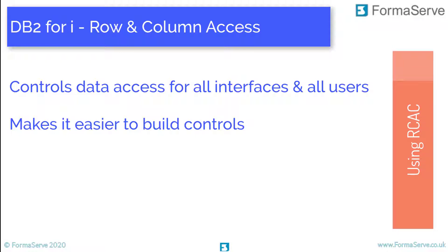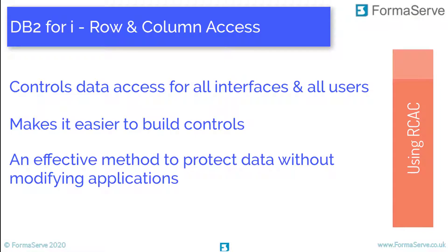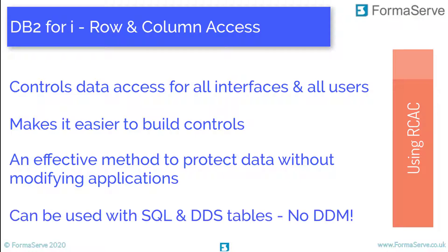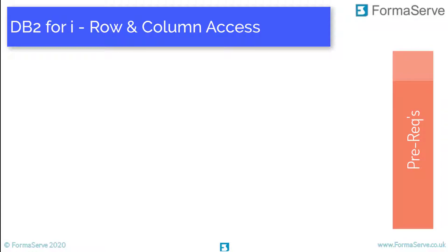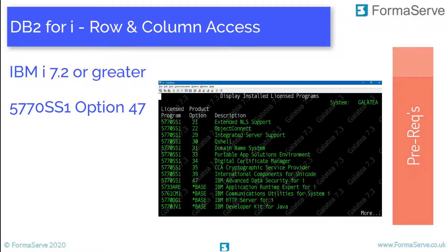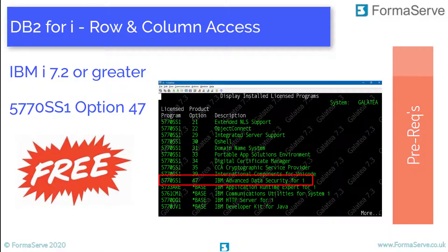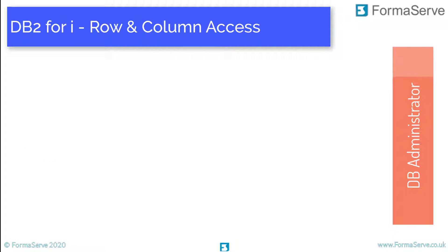RCAC does expect you to have sound object level security in place - it does not replace that. RCAC can be used on both SQL and DDS defined tables and physical files. It cannot be used on DDM, nor on program described files. For prerequisites, we must have at least OS version 7.2 or later, and we must have product option 47 of 5770-SS1, which is IBM Advanced Data Security for i. Option 47 is a free-of-charge option as it's part of the OS.